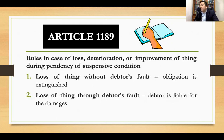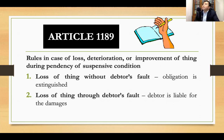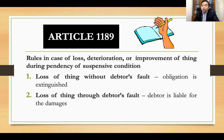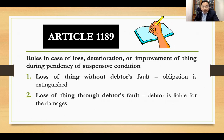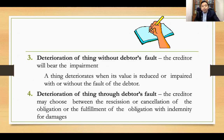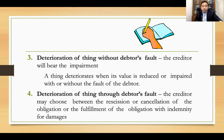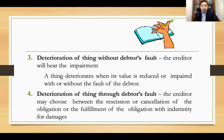What is the rule summarized under Article 1189? In case of loss, deterioration, or improvement — LDI — of the thing during the pendency of a suspensive condition: if the loss of the thing is without the fault of the debtor, then the obligation is extinguished. Second, if the loss of the thing is due to the debtor's fault, then he becomes liable for damages. Third, if the thing deteriorates without the fault of the debtor, the creditor will bear the impairment. When you say deterioration, the value of the thing is reduced or impaired with or without the fault of the debtor.